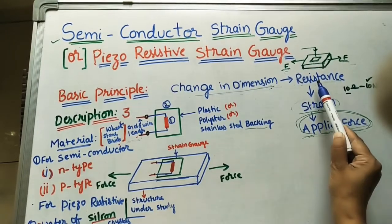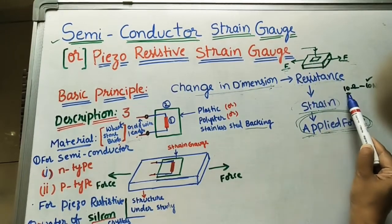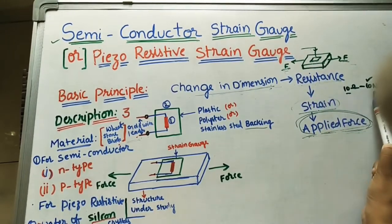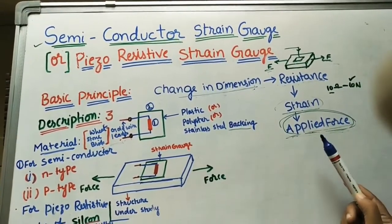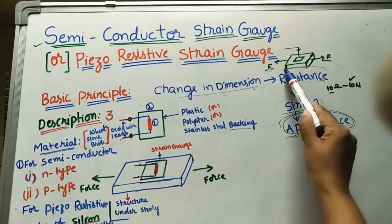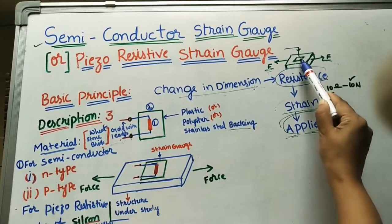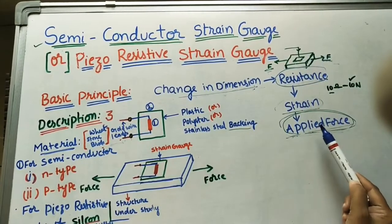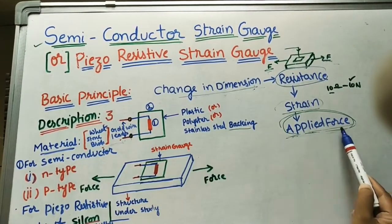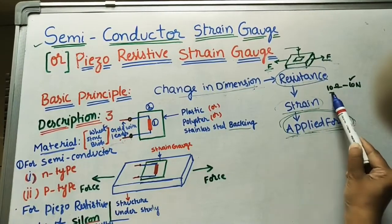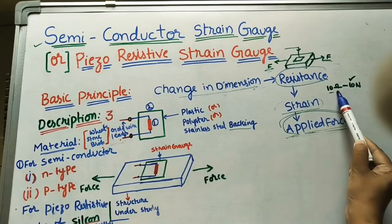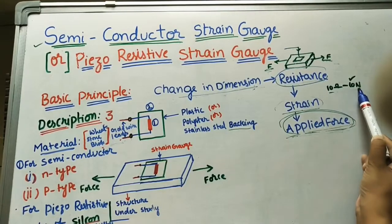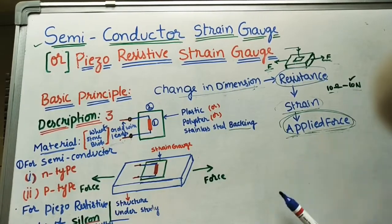In calibrated form, this resistance is mapped to applied force values — for example, 10 newtons, 20 newtons, and so on. The change in resistance of this material finds the applied force in calibrated form: for 10 ohms the applied force is 10 newtons, like that.